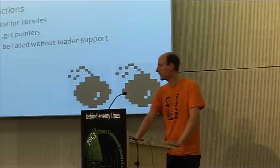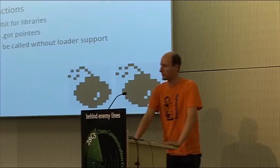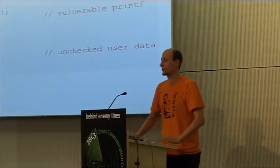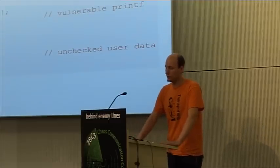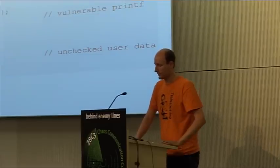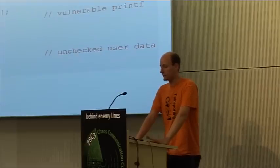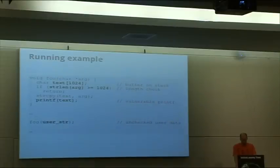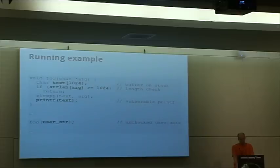I now want to go through the steps of breaking all the different protection mechanisms one by one. We have a little running example: a buffer on the stack where the programmer added a length check. If the input buffer is too long we fail; otherwise we copy it to the local buffer and print it. The attacker controls the string and can inject arbitrary data.